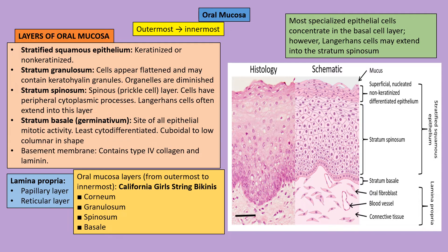Now for oral histology — we discuss the different layers of oral mucosa. The oral mucosa is stratified squamous epithelium, but it can be keratinized or non-keratinized depending on location. The stratum basale is the bottommost layer, also called stratum germinativum, where all epithelial mitotic activity occurs; it is one of the least cytodifferentiated layers. Above it is stratum spinosum, the prickly cell layer, where Langerhans cells often extend. Then stratum granulosum contains keratohyalin granules, and stratum corneum is the topmost layer with flattened, pyknotic cells with few organelles.